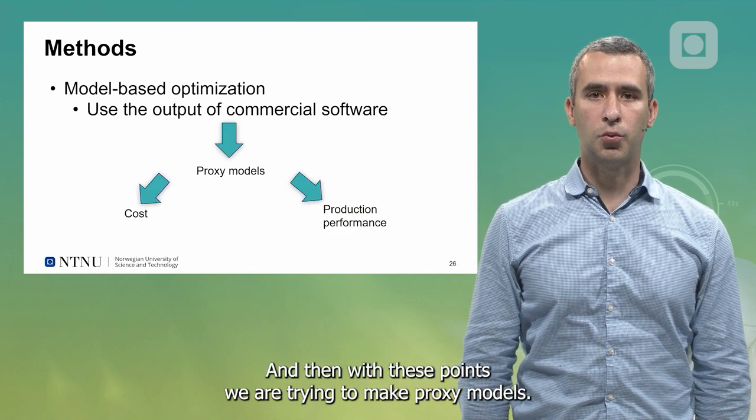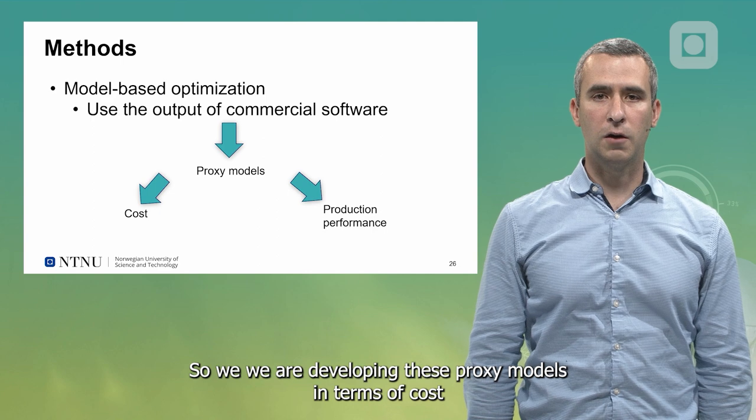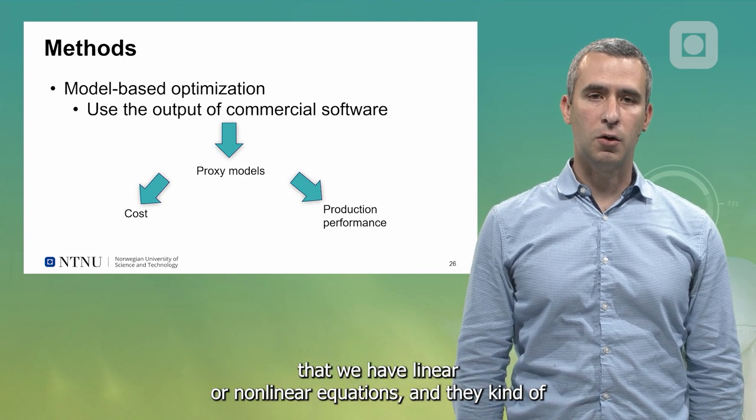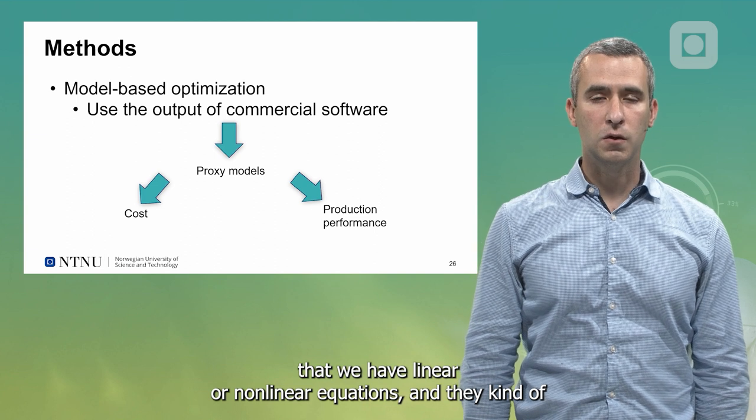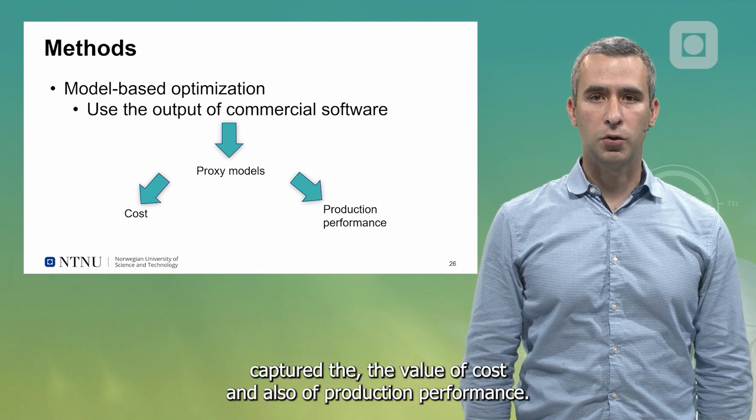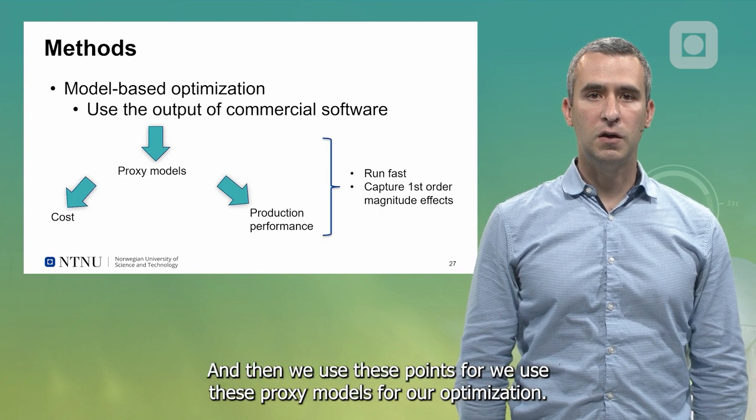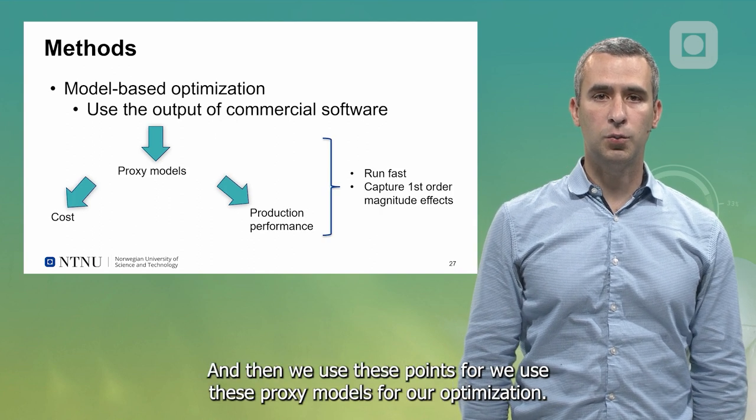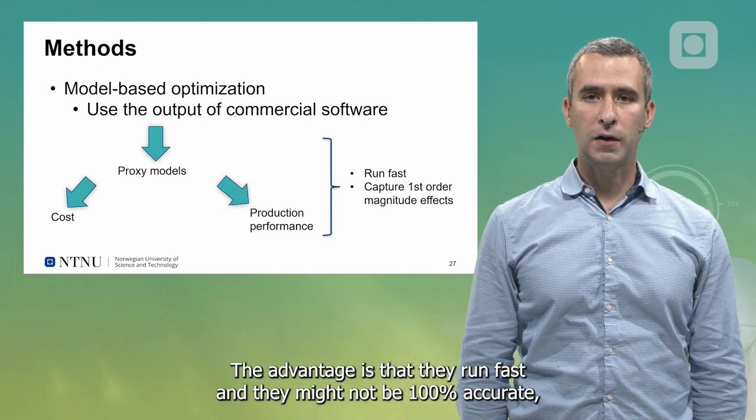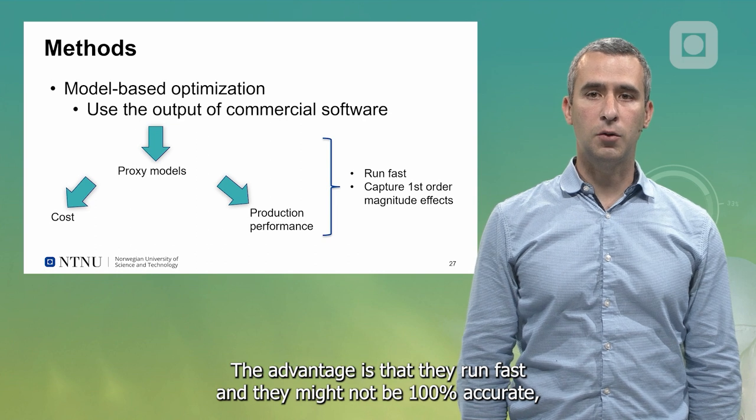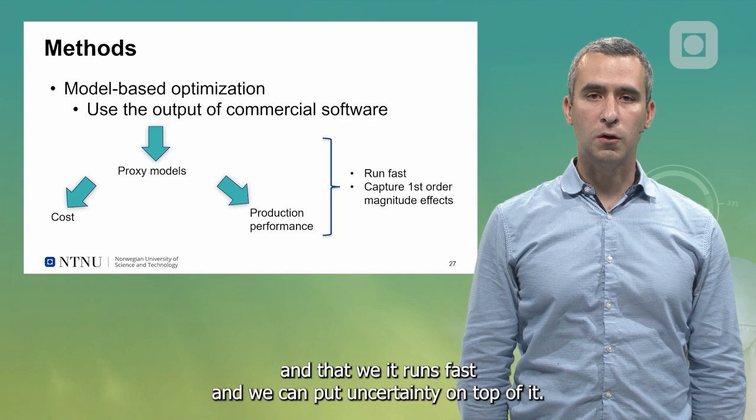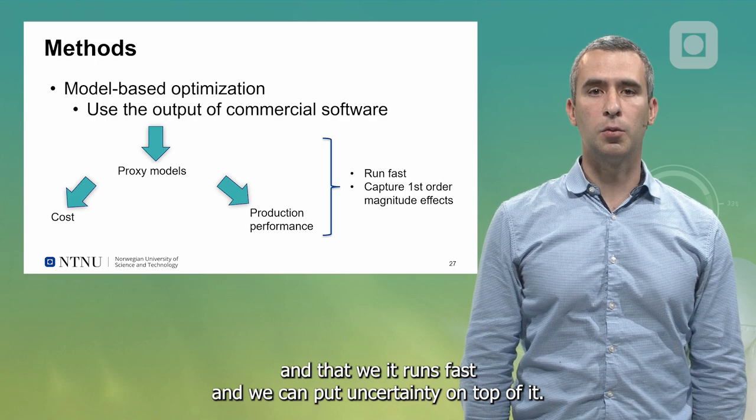With these points, we are trying to make proxy models. We are developing these proxy models in terms of cost using linear or non-linear equations that capture the value of cost and also of production performance. Then we use these proxy models for our optimization. The advantage is that they run fast and they might not be 100% accurate, but they capture first order magnitude effects, they run fast, and we can put uncertainty on top of it.